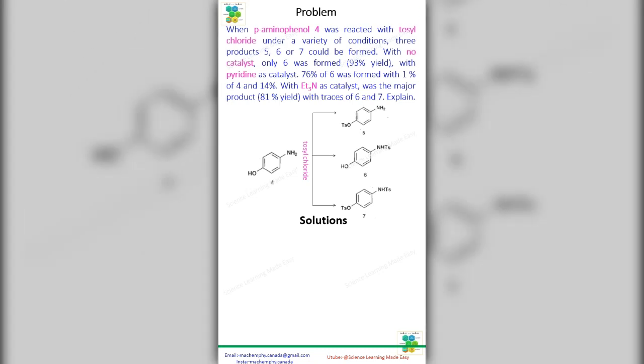Problem is, when p-aminophenol-4 was reacted with tosyl chloride under a variety of conditions, three products 5, 6, or 7 could be formed.